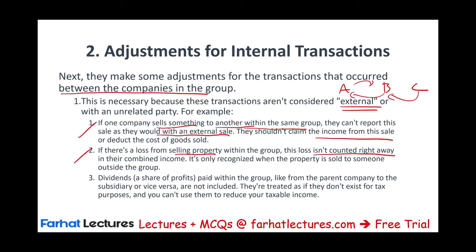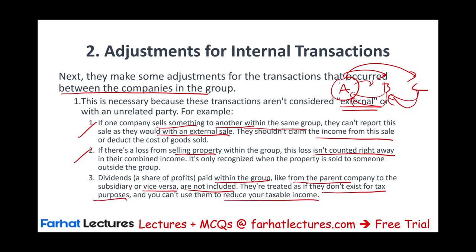Regarding dividends: any dividend paid within the group — from the parent to a subsidiary, or vice versa, such as A paying dividends to B or C, or B paying to A — are not included. They are treated as if they don't exist for tax purposes, because you cannot use them to reduce your taxable income. So step two requires making these certain adjustments.